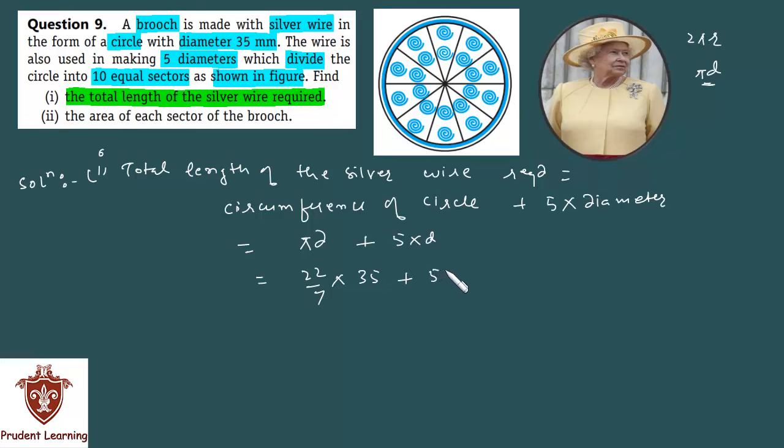Further simplify: seven fives, 35. 22 into 5 is 110 plus 35 into 5 gives you 175. When you sum these two you get 285 and the unit is mm.